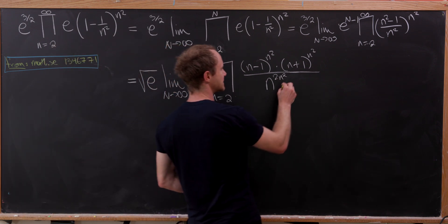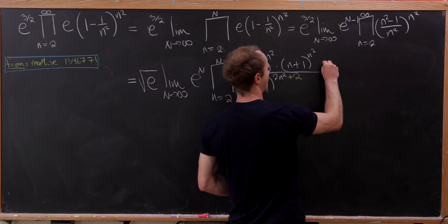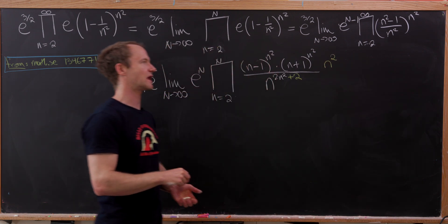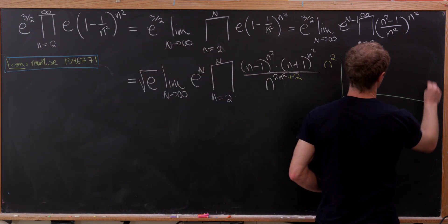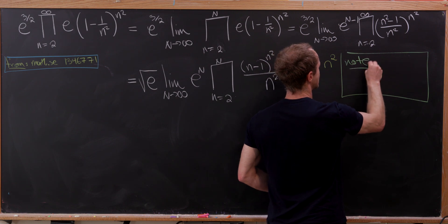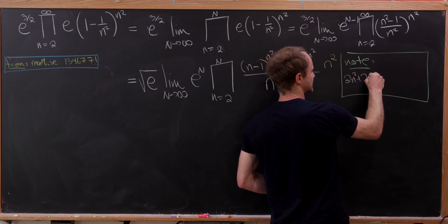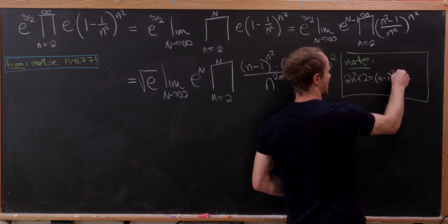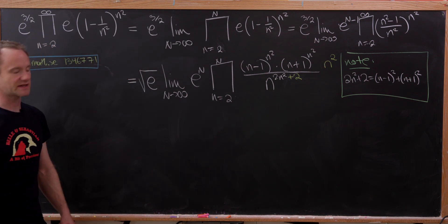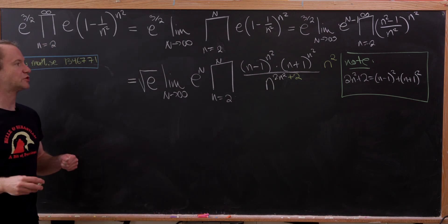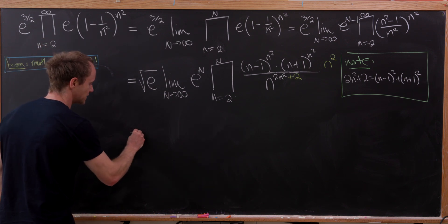Now I'm going to add a 2 into the exponent in the denominator, but to counteract that I'll multiply by n squared in the numerator. This is because it allows a nice simplification using the following observation: 2n squared plus 2 is the same thing as n minus 1 squared plus n plus 1 squared. That's how we rewrite 2n squared plus 2 to split this term in the product into two terms.